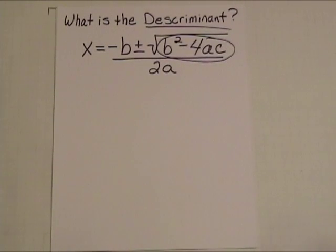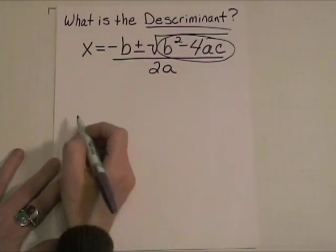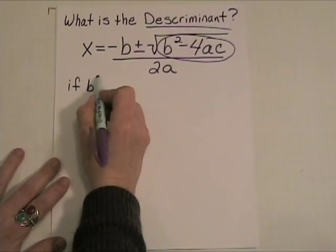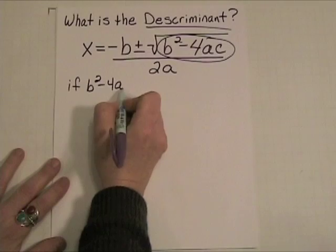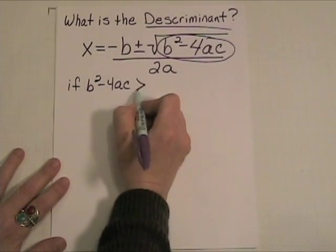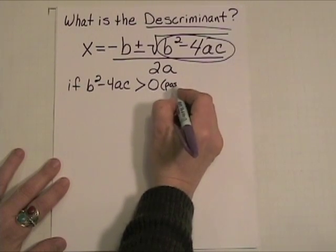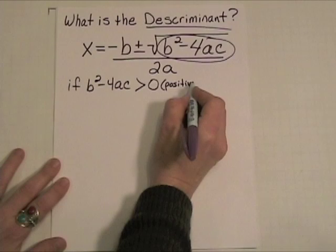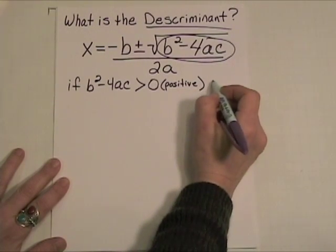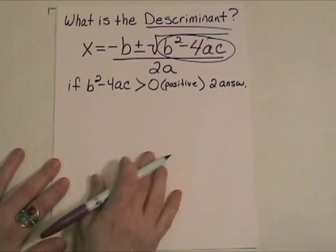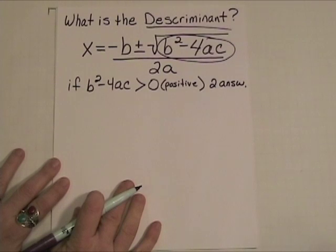All right, now, there are only three things that can happen here. So let's take a look quickly. If the b squared minus 4ac is greater than zero, that means it's positive, you're going to get two answers. We'll abbreviate that. Because you can take a square root of any positive number.